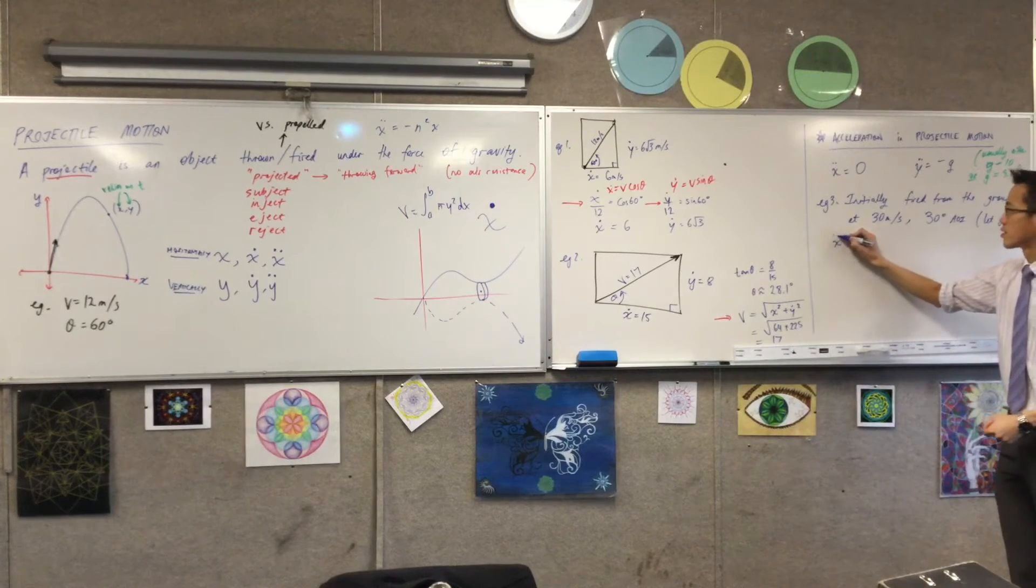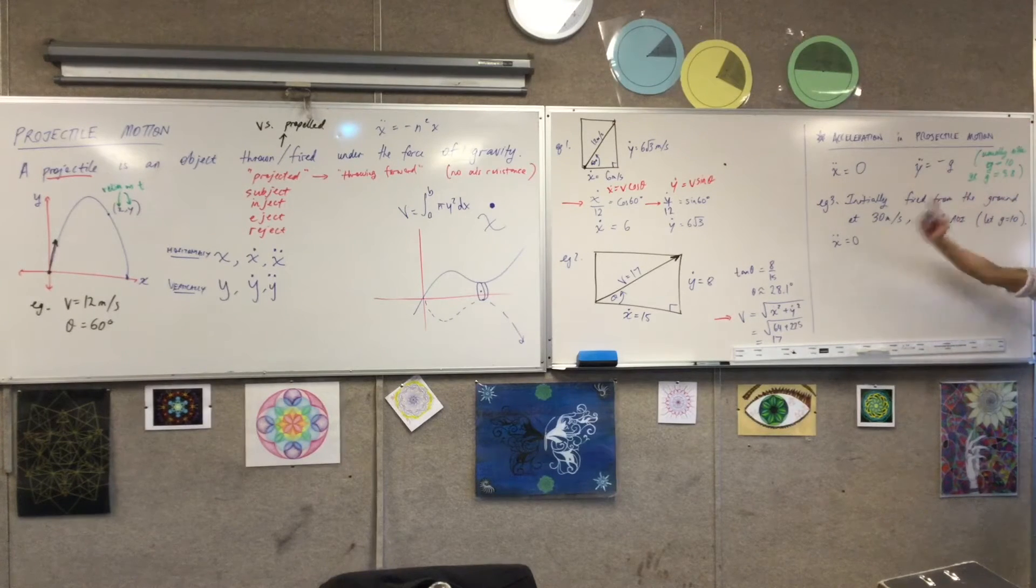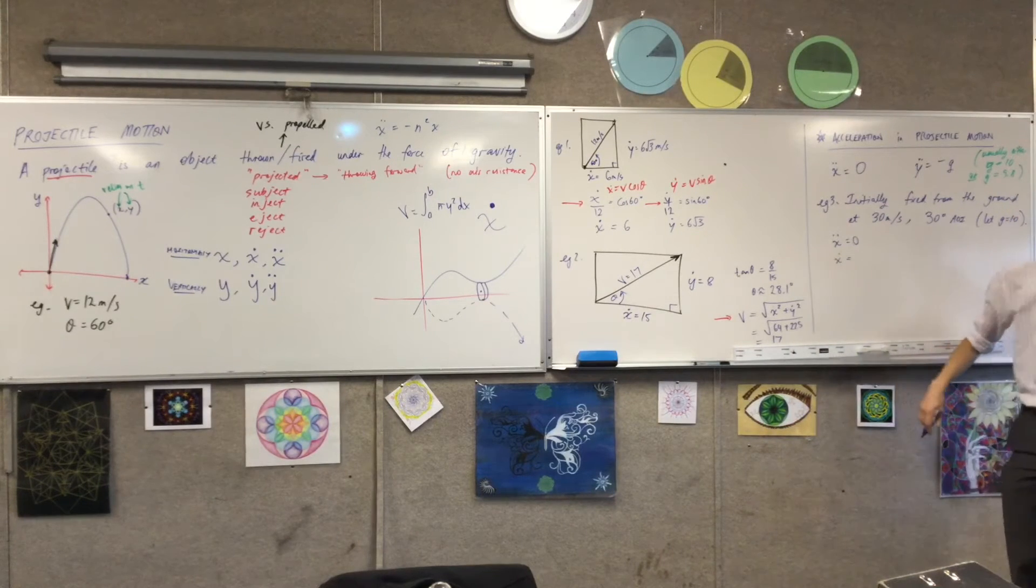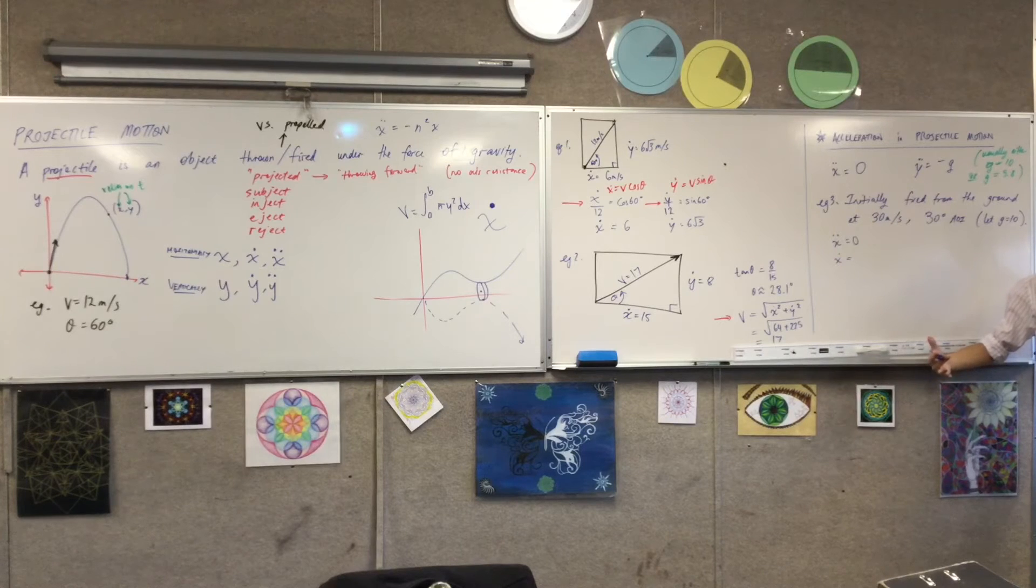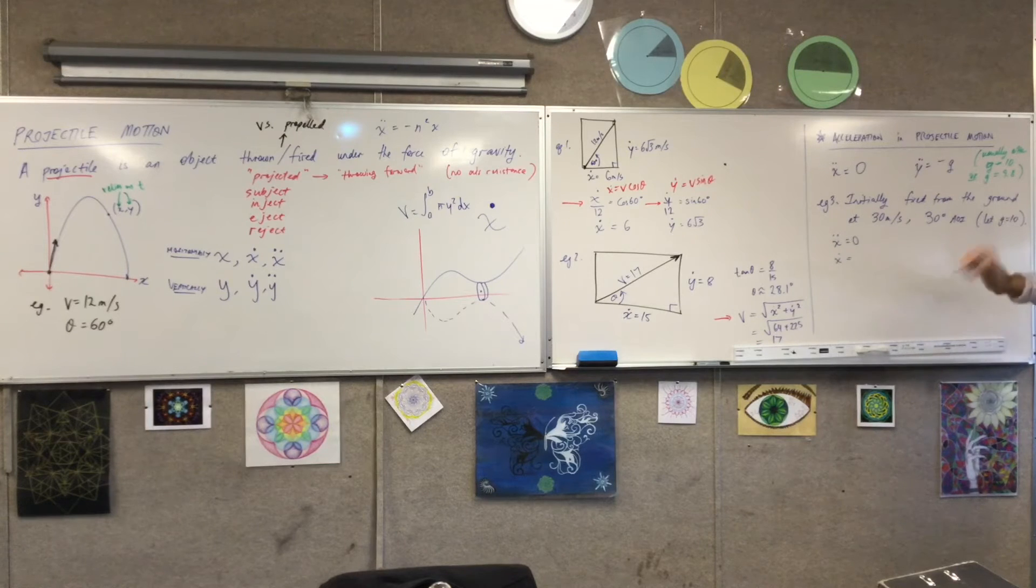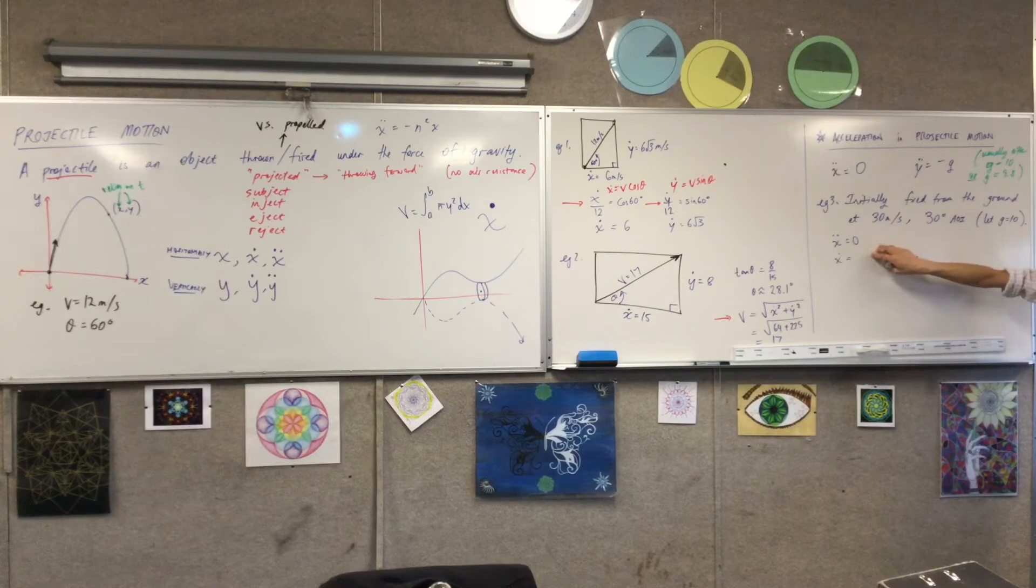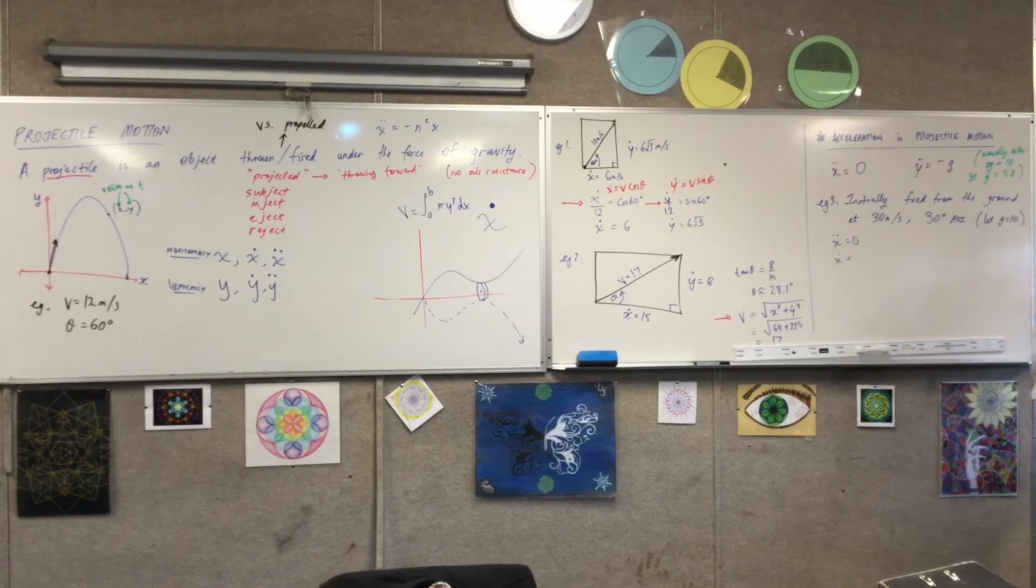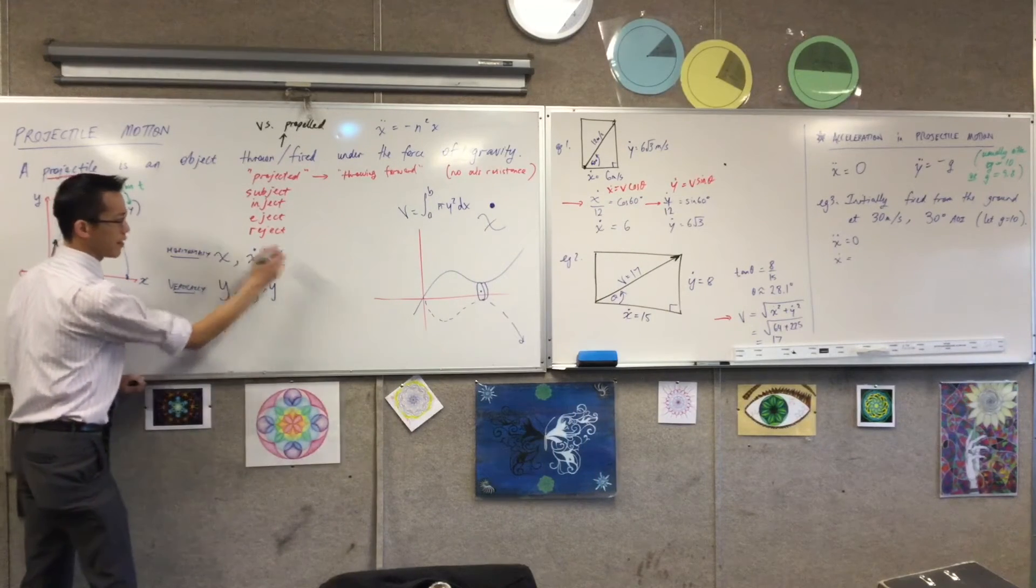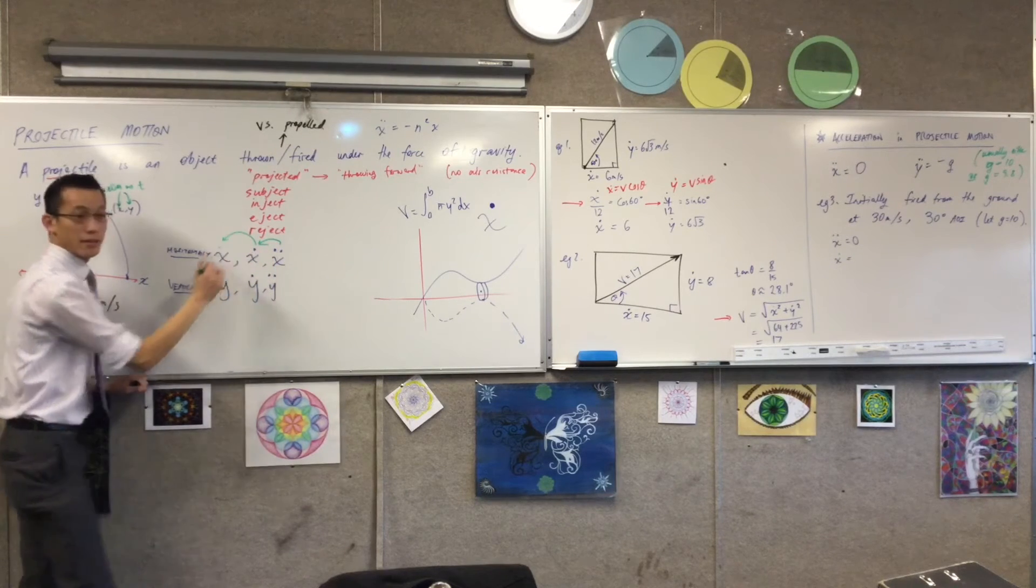Let's go with the horizontal first. So if you've got x double dot equals zero, I want to climb up the ladder to get to my other horizontal equations of motion. So to get to x dot, what do I have to do? I'm integrating, right? I've started from the bottom in terms of the highest derivative, so now I'm going to go up and up and up. Now, when you have zero and you integrate it, you just get a constant.